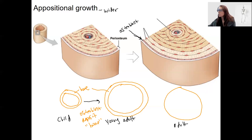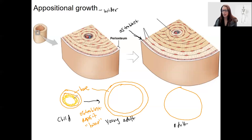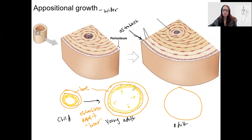There is an inner layer in the middle of the bone which contains osteoclasts. This is the layer that is going to decrease in size as the bone grows. This is what is eating away at the inside of the bone, causing not just the diameter to widen, but the medullary cavity to widen as well. This is our osteoclast activity — breaking down bone matrix.